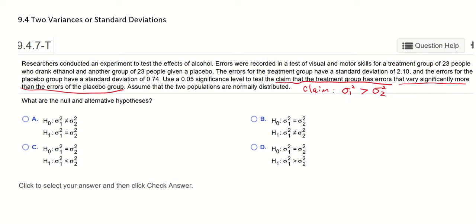With our claim it's easy to find our null hypothesis and alternative hypothesis. The null hypothesis is always the one with the equal sign so A is definitely not it. It looks like D is the answer with the null hypothesis with the equal sign and H1 is the same as the claim.